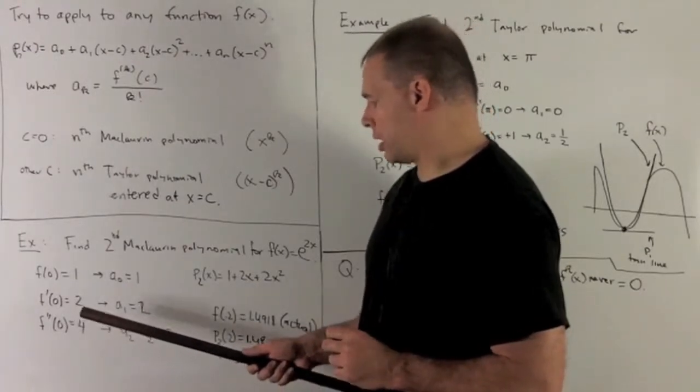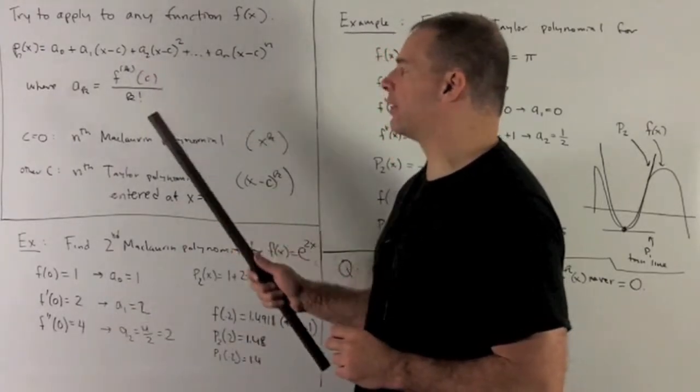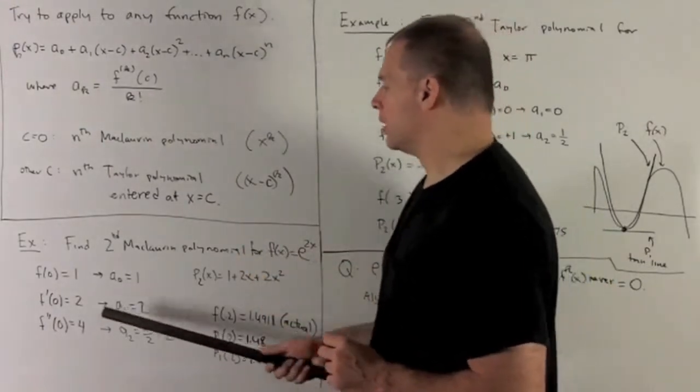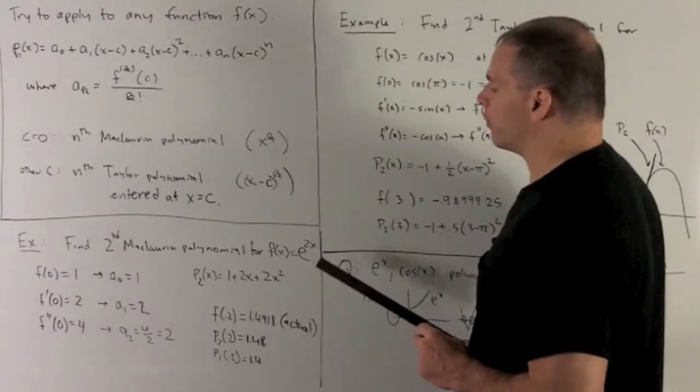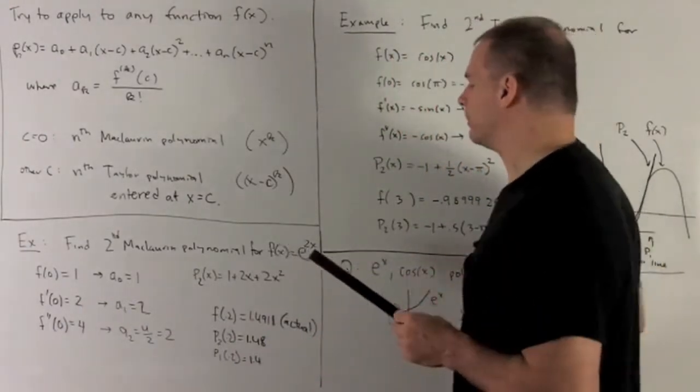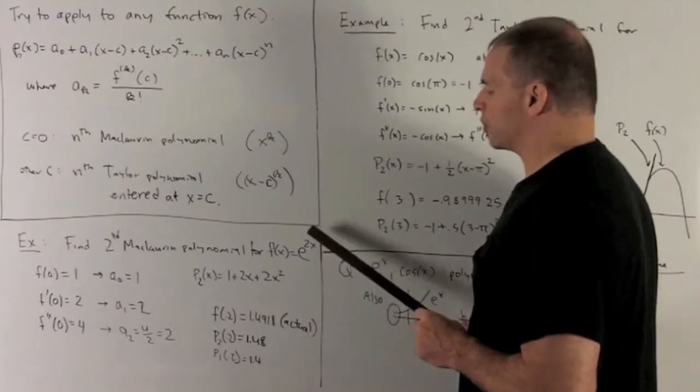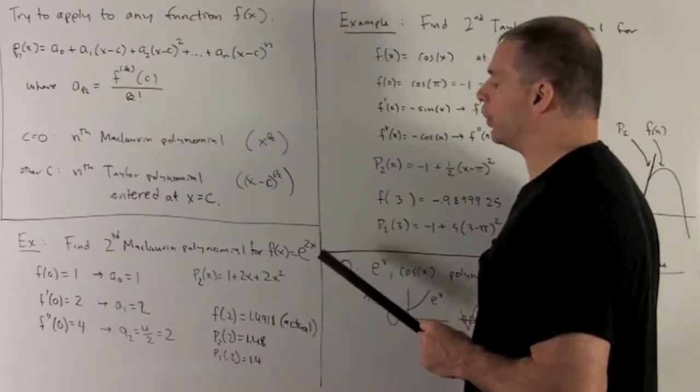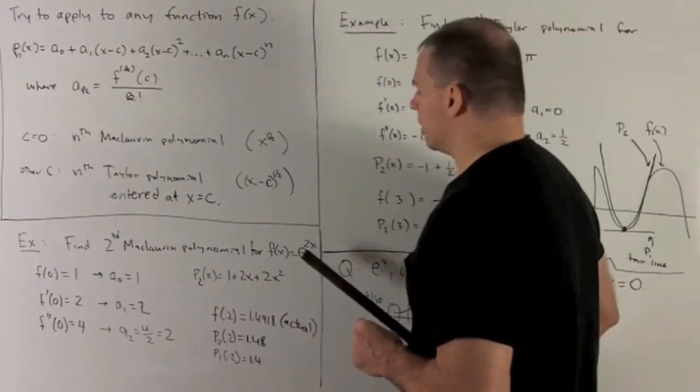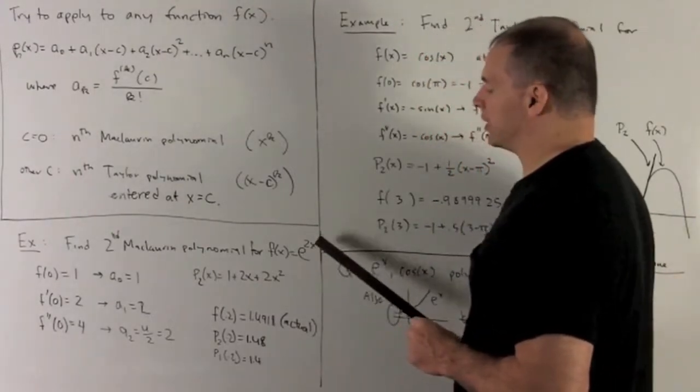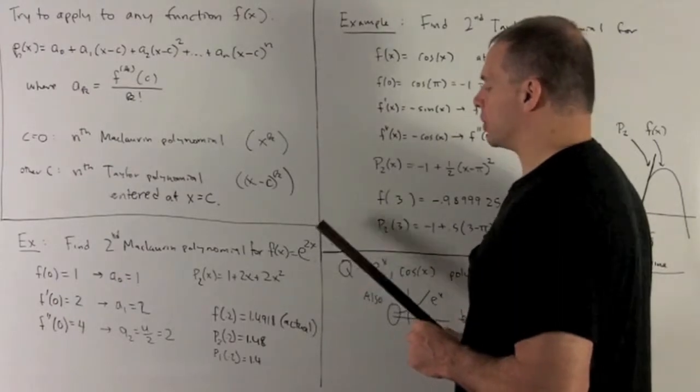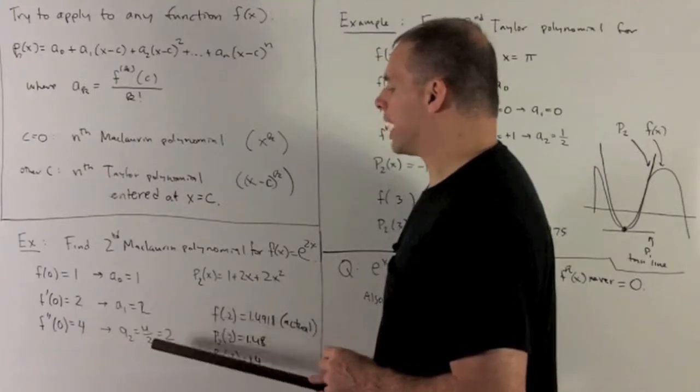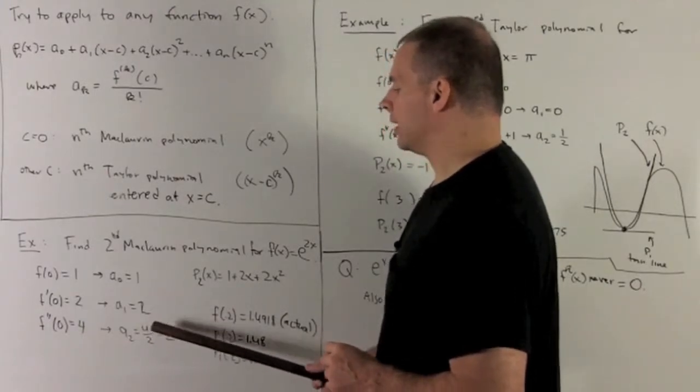And then for a₂, we'll take the second derivative, evaluated at 0, and then divide by 2 factorial, which is 2. So do another derivative. We'll have 2e to the 2x as our first derivative. Another derivative of this just returns our e to the 2x, and then multiply by the top, which gives us a 2. Hits the other 2, giving us a 4. Put 0 into it. That's going to be e to the 0 times 4. So it's 4 times 1, which is just 4. Then a sub 2 is 4, divided by 2 factorial, which is 2, gives me 2.